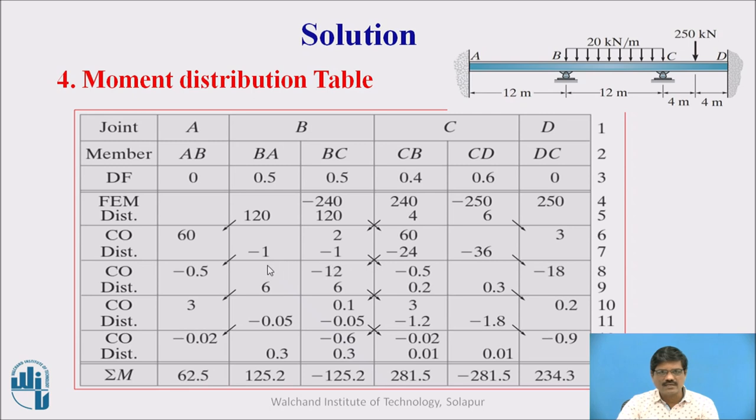And after the distribution is over, again carry over takes place. In this way it is an iterative process. Once the first cycle is over, you have to go for a second cycle, third cycle. So number of cycles you have to perform till we get a very small and fractional moment left. You can see here it is 0.01, 0.01. So at that level we can stop that process. And then we can take a summation of all these moments so that we get the final moments of all the members. So here at the last row you can see the summation is taken. And these are the final moments of the members.